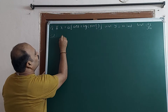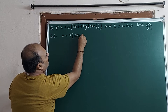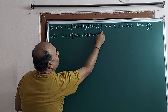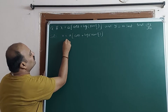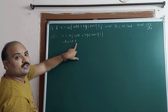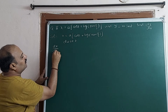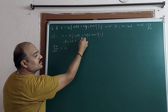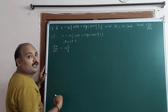First, x = a(cos t + log(tan t/2)) is given. Whenever x is in terms of t, differentiate with respect to t. So dx/dt = a — since a is a constant we take it outside — times d/dt of cos t. d/dt of cos t is minus sin t.